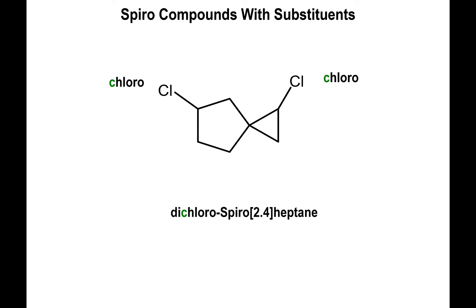Now comes the difficult part: determining the numbers associated with the substituents. Carbon number one goes on the carbon adjacent to the bridgehead on the smaller ring — and we have two possible carbons to choose from. Starting with the first option, this is carbon 1 on the smallest ring next to the bridgehead. Going clockwise so we hit the bridgehead last, the bridgehead becomes carbon 3. Going from 2 to 3 up and to the left, the next corner is carbon 4, then we complete the sequence counterclockwise. The chloro groups are at carbon 1 and carbon 5, giving 1,5-dichlorospiro[2.4]heptane.